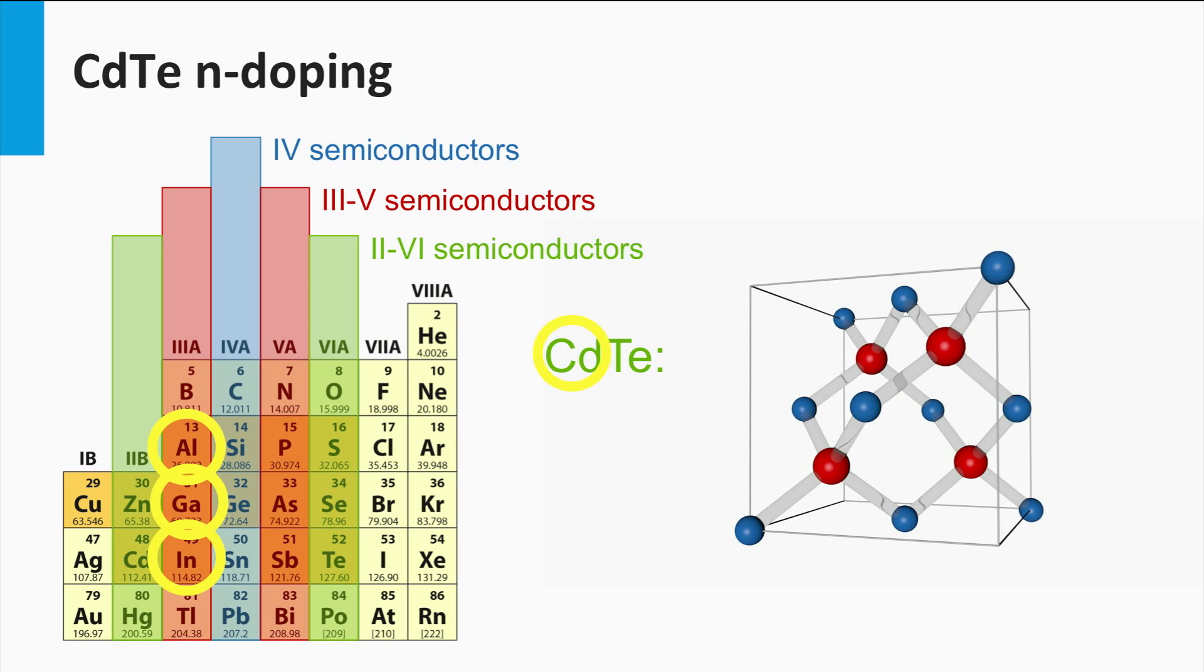N-doping of cadmium telluride can be achieved by replacing the two valence atom cadmium with a three valence electron element like aluminum, gallium, and indium. These elements act as shallow donors. N-doping is achieved as well by replacing the six valence tellurium atom with a seven valence electron element like fluorine, chlorine, bromine, and iodine atoms. They act as shallow acceptors. A tellurium vacancy acts like a donor as well.